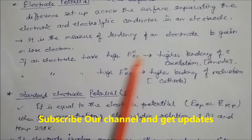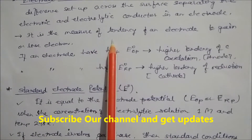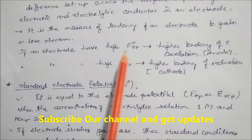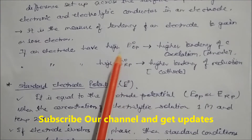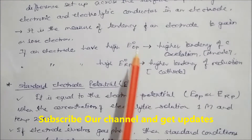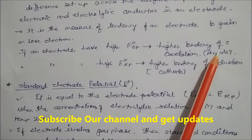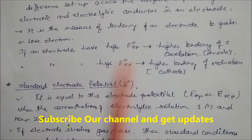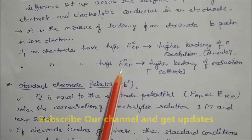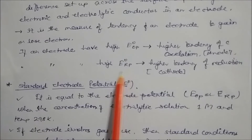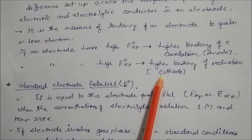If a metal is losing or gaining electrons, it has a tendency associated with it. If an electrode has a high oxidation potential (EOP), it has a high tendency of oxidation — that is called the anode. If an electrode has a high reduction potential (ERP), it has a higher tendency of reduction, and that electrode is called the cathode.